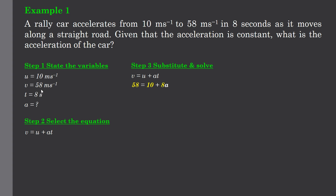Now we just need to substitute our values in. So where we have the letter v, we substitute in the value for v, 58 for this example. We have the letter u, we substitute in the value 10 for this example. a was 8 and, sorry, t was 8 and a is the unknown. So we now got a mathematical expression 58 equals 10 plus 8a.